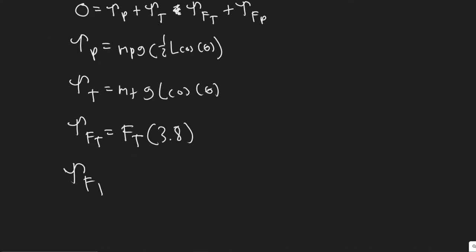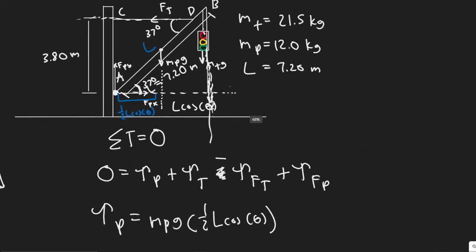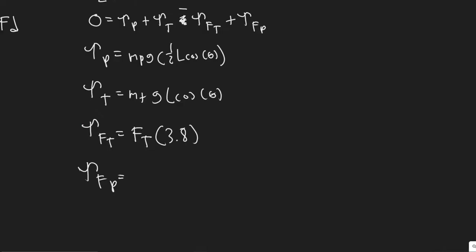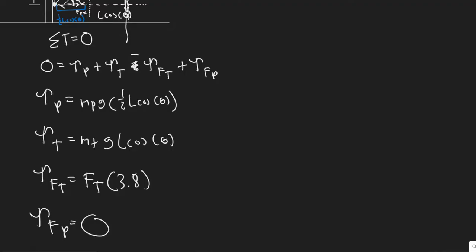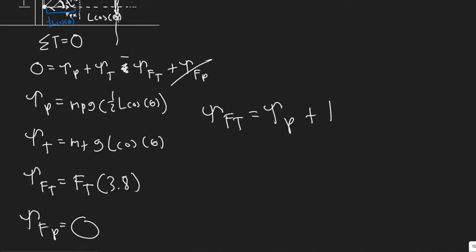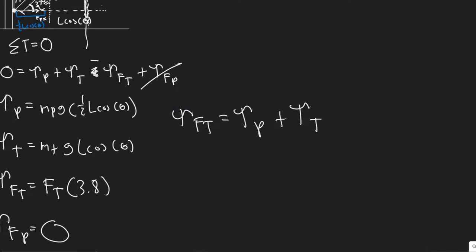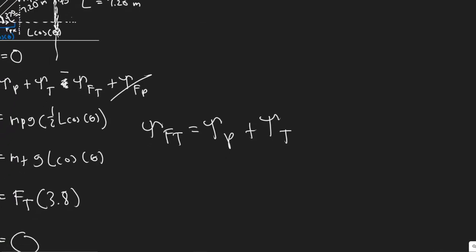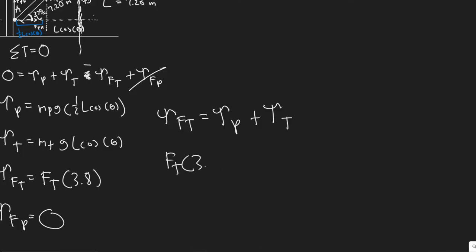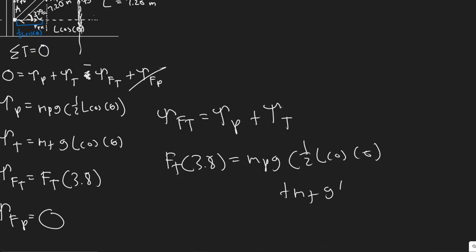The torque due to FP is zero because it acts right at point A — the point about which we're summing torques — so the distance is zero, and F times 0 equals 0. Moving terms around, since the net torque equals zero, we get: F_T × 3.8 = M_P·G × ½·L·cos(θ) + M_T·G × L·cos(θ).